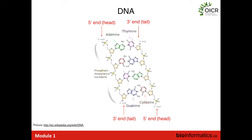Reverse complementing DNA sequences is very common in bioinformatics. When you work with sequencing data in a FASTA or FASTQ format, you'll see an ASCII representation of the DNA that was sequenced — just one of the four letters — and that's always going to be five prime to three prime. If you reverse and complement it, you get the sequence for the opposite strand.